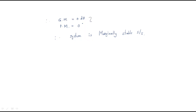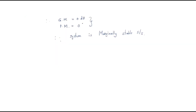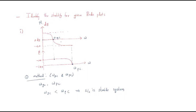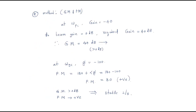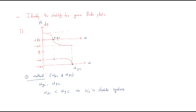By using these conditions, we can tell the given system is the marginally stable system. First look at the gain crossover frequency and the phase crossover frequency, then find out the gain margin and phase margin. These are two different methods to understand gain margin, phase margin, gain crossover frequency and phase crossover frequency. I hope all of you understand the session. Thank you.